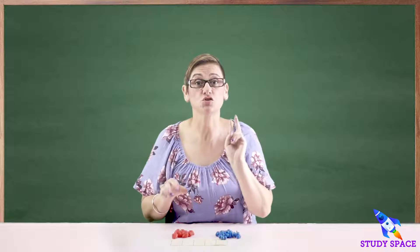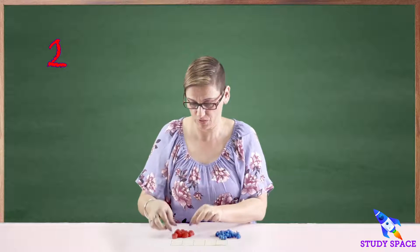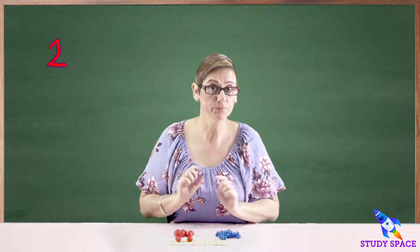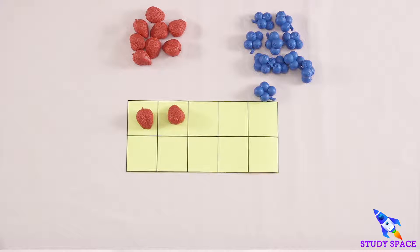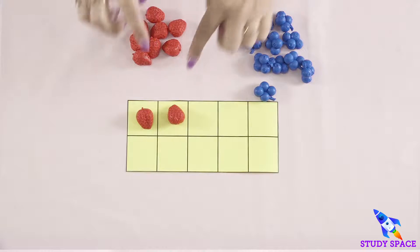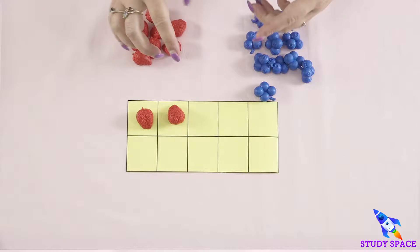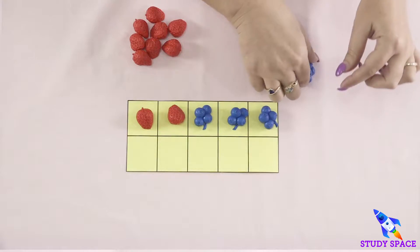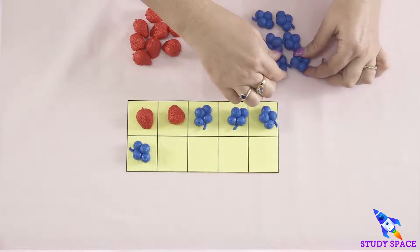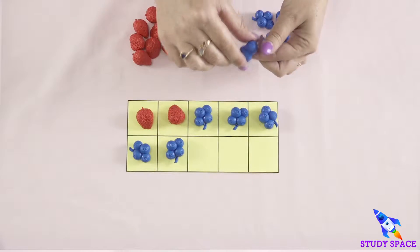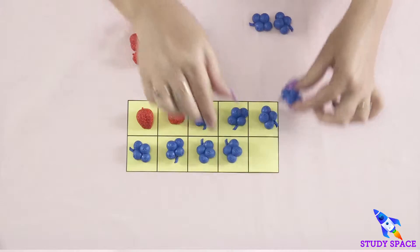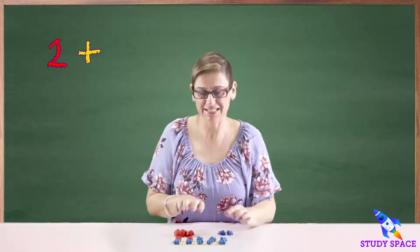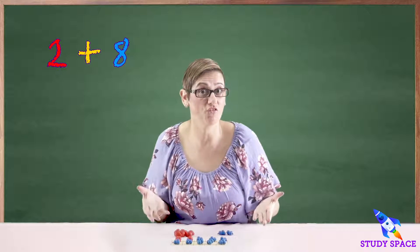This time I need two strawberries. So how many blueberry friends am I going to need? If I've got two, let's count: one, two, three, four, five, six, seven, eight. So two plus eight — more friends of ten.